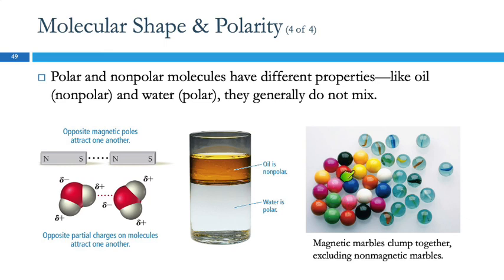It's like magnetic marbles mixed with regular glass marbles — the magnetic marbles clump together and the glass marbles just roll around, because the magnetic ones attract each other and the glass ones do not. This has a big effect on whether substances mix with each other.